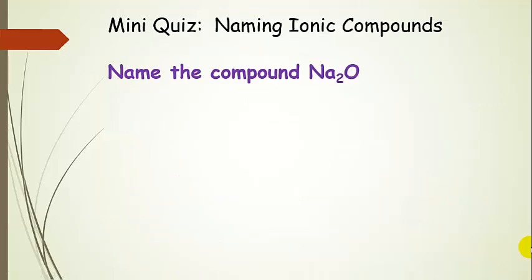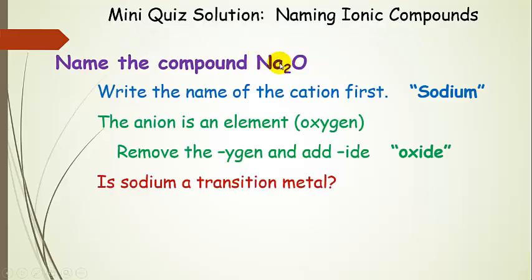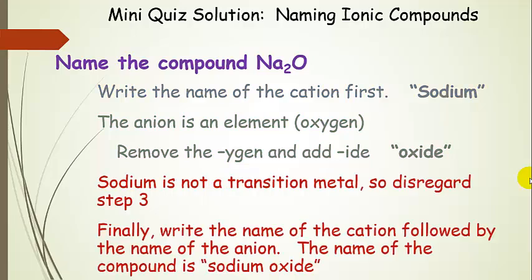Let's name this next compound. We see we have the elements sodium and oxygen forming a compound. We write the name of the cation first — the metal — which is sodium. The anion is also an element, oxygen, so we take off the YGEN ending and add IDE to get oxide. We ask: is sodium a transition metal? Definitely not — it's in Group 1 — so we disregard the charge-in-parentheses step. Writing the cation followed by the anion, the compound name is sodium oxide.